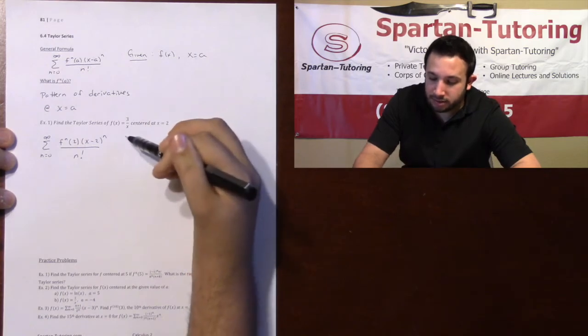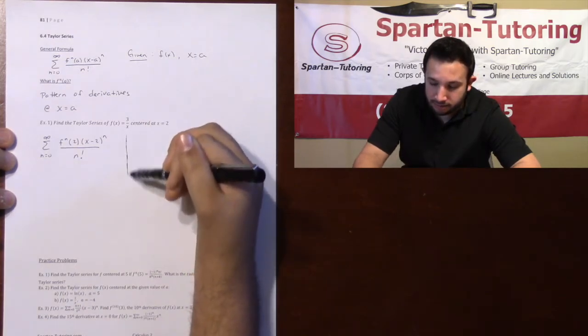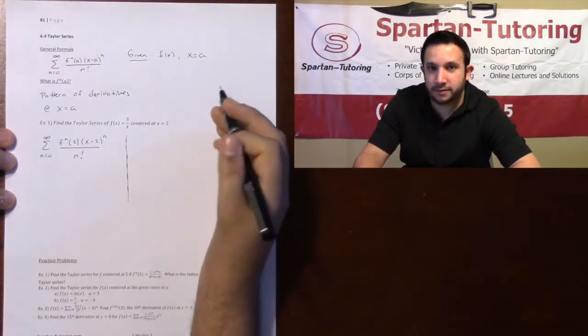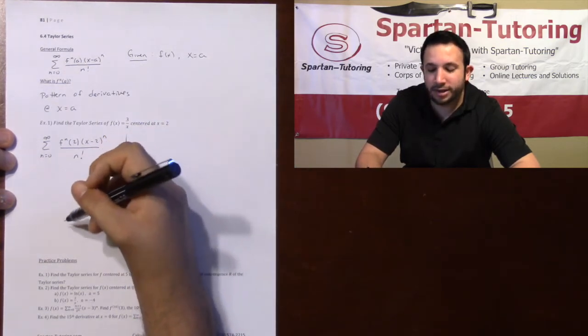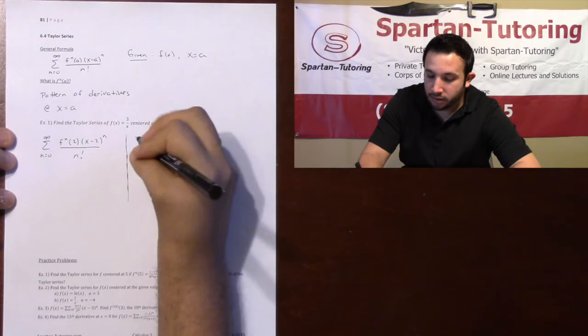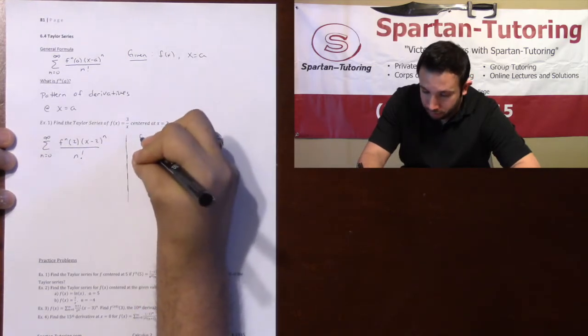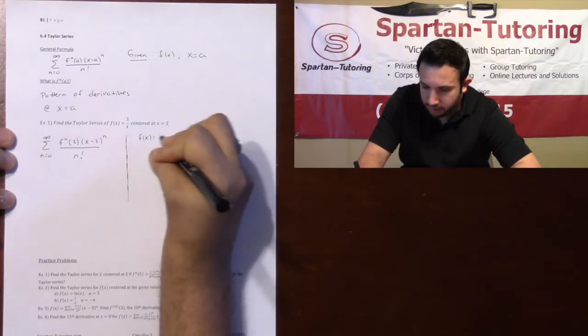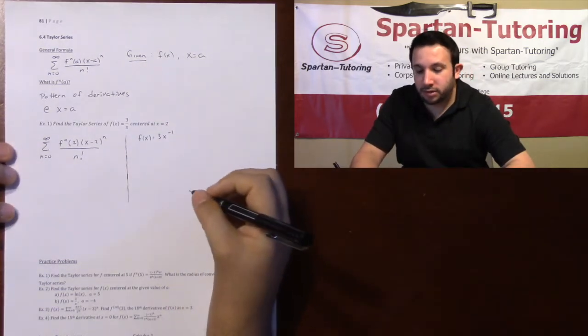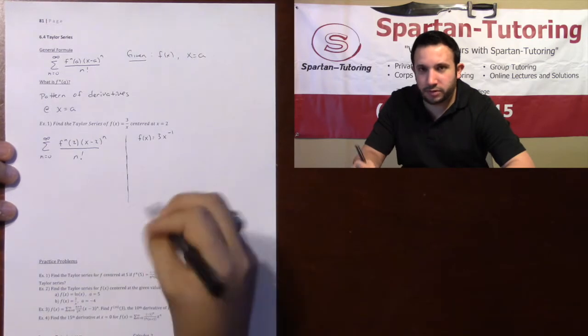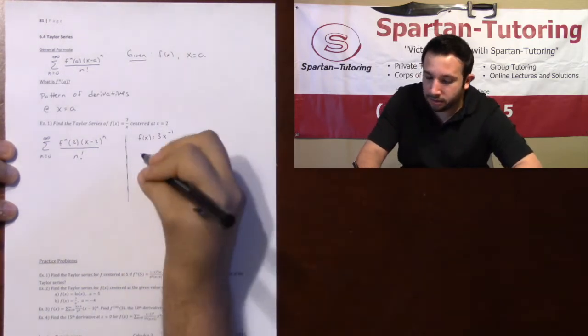So what I need to do next is off to the side, let's find f to the n of 2, because if I can find f to the n of 2, I plug it in, and I'm done. So remember, it's a pattern of derivatives. I'm going to rewrite f of x really quick as 3x to the negative 1. That way, it's easy for me to take the derivative.